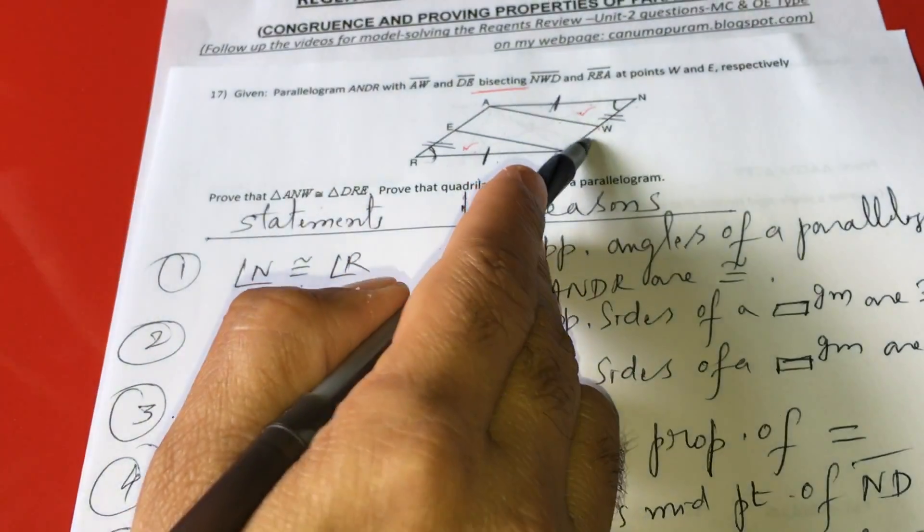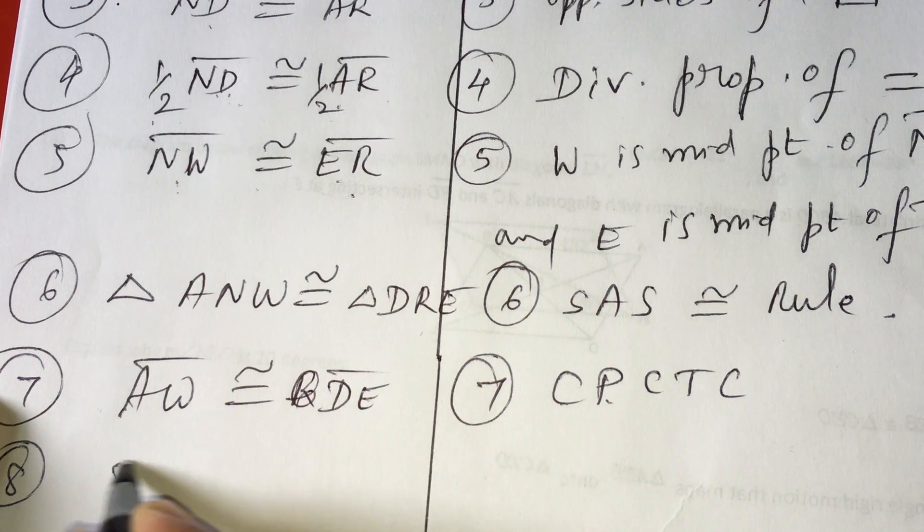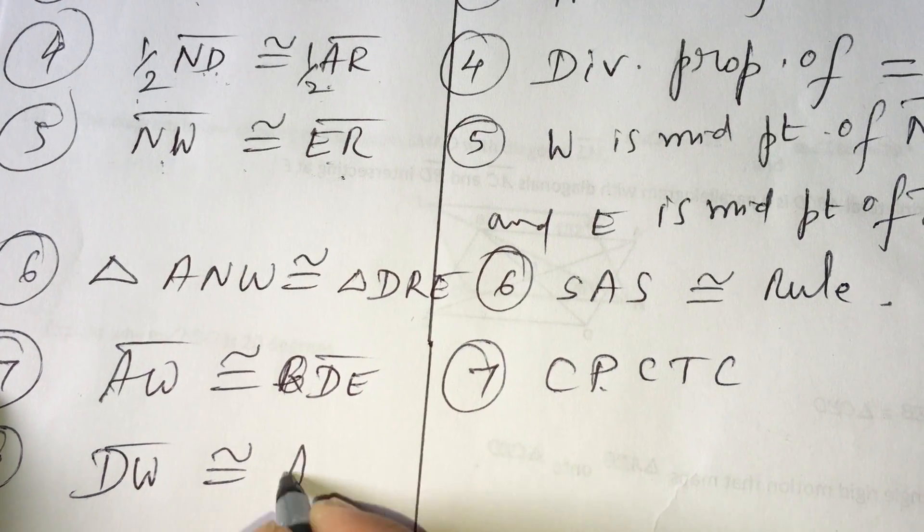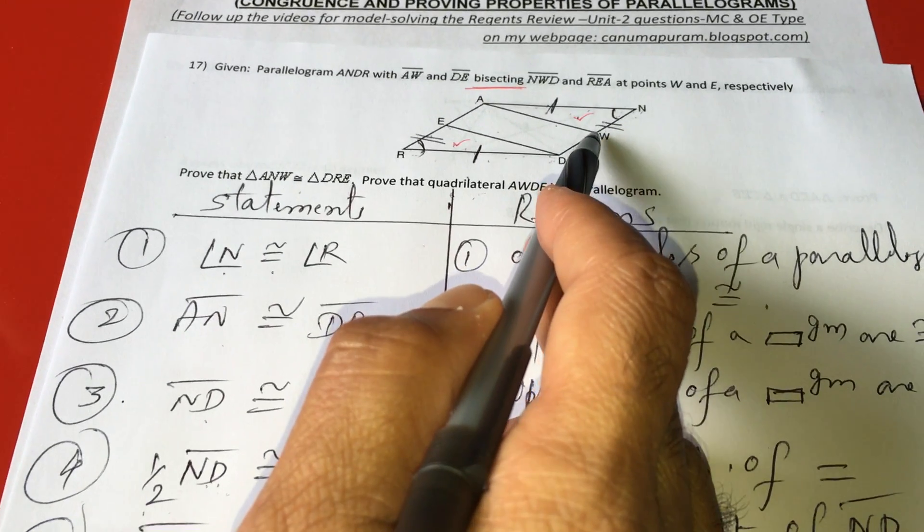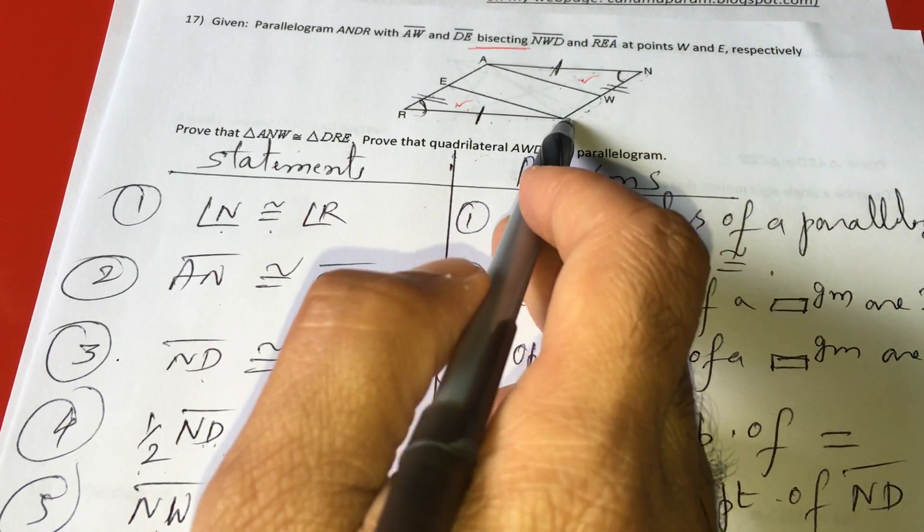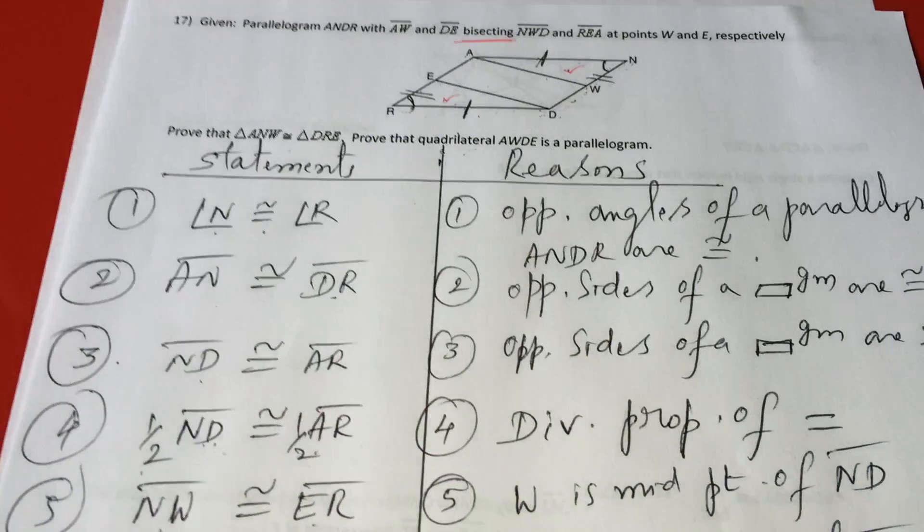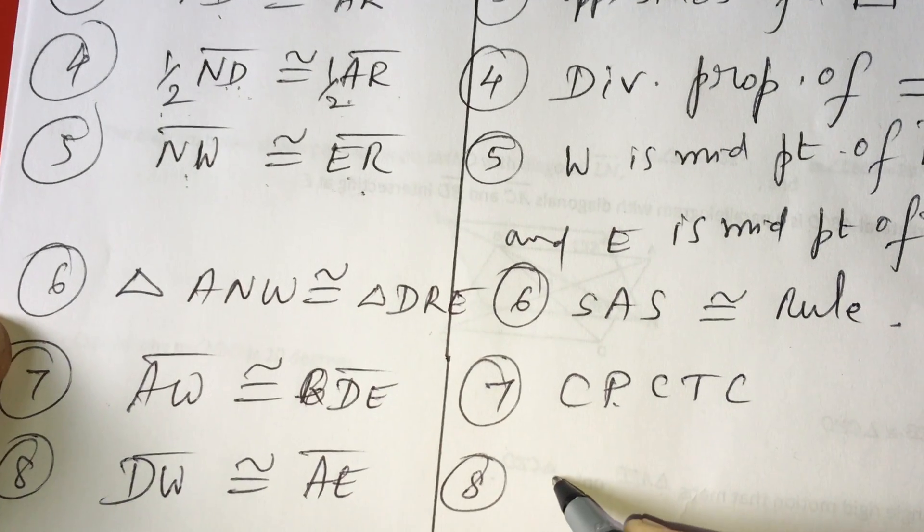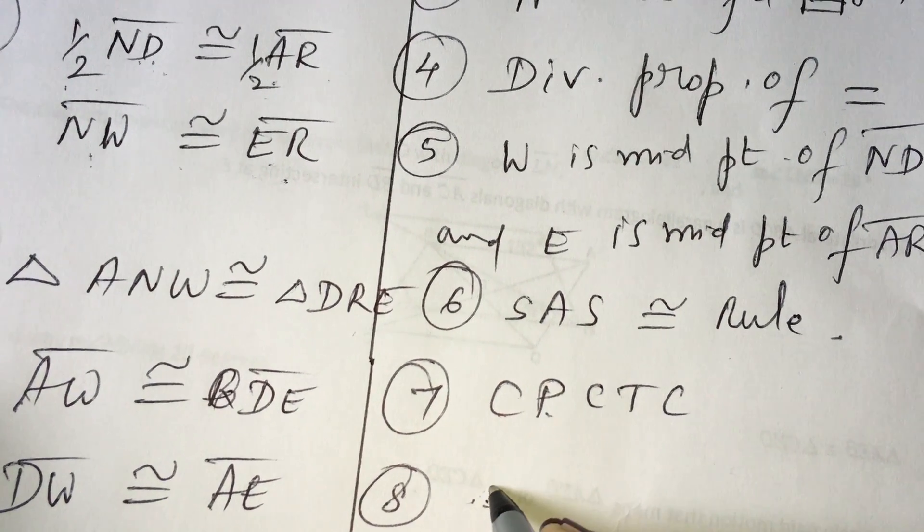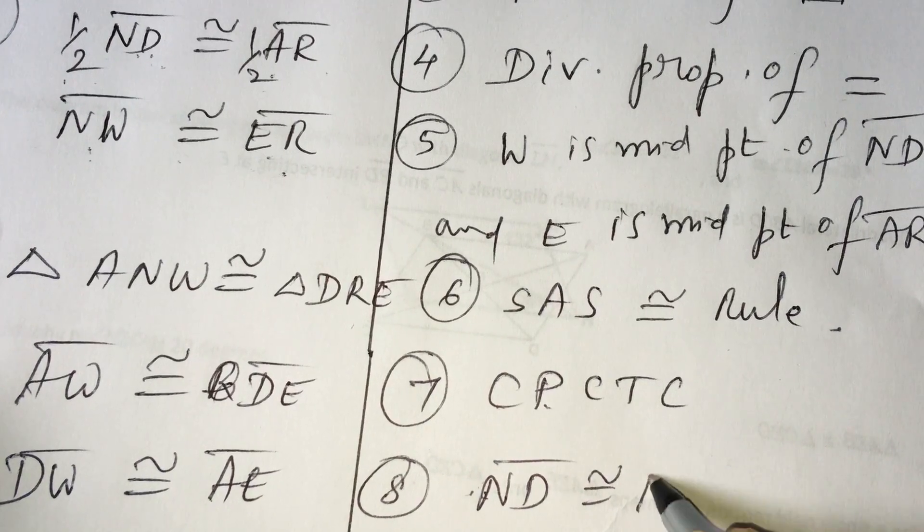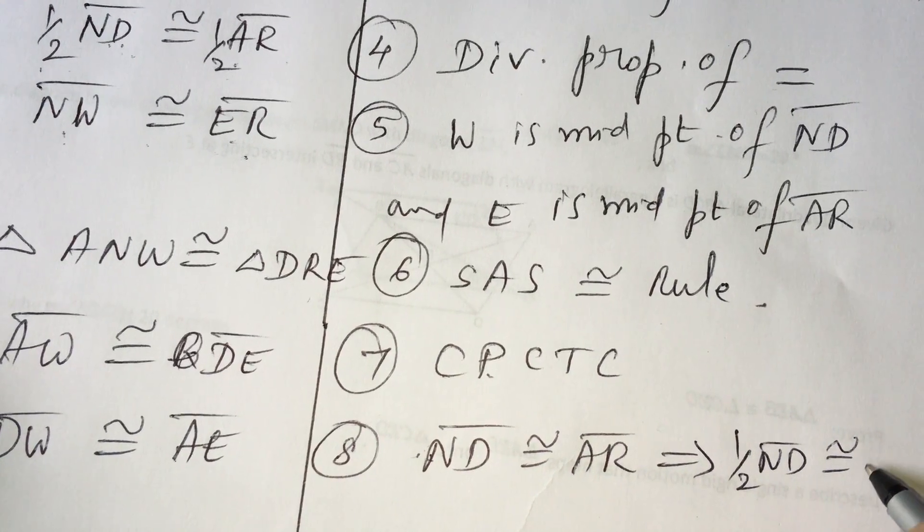Next, this one also. But I want to show DW is congruent to AE. Why are they congruent? We have already proved that W is the midpoint. Therefore, ND is equal to AR, and half of ND is DW, and half of AR is AE. That's why they are equal.